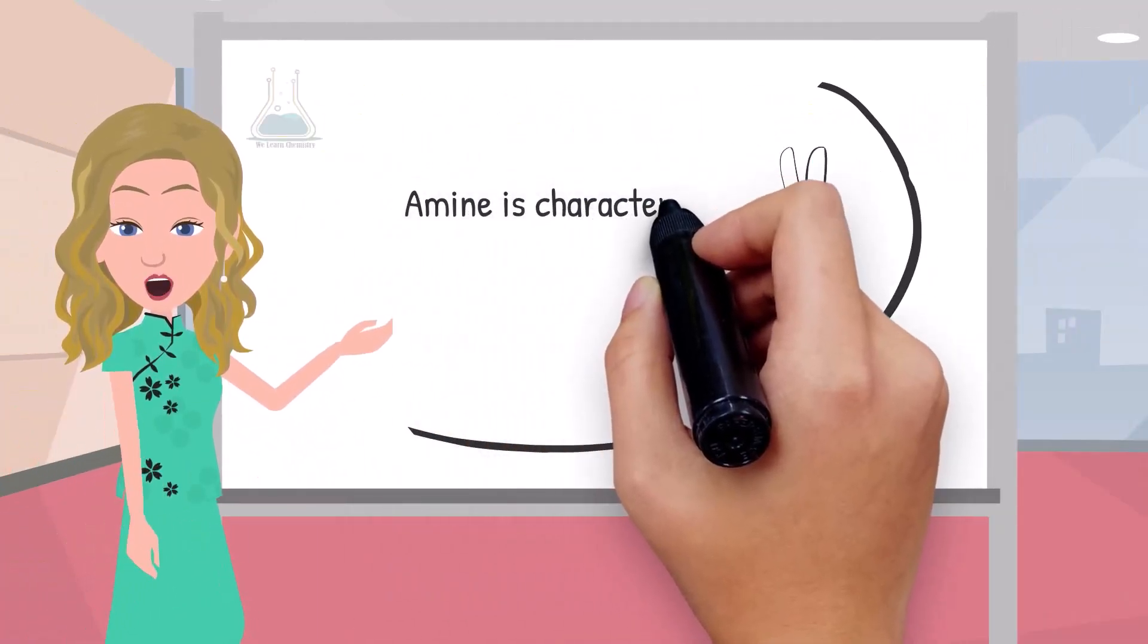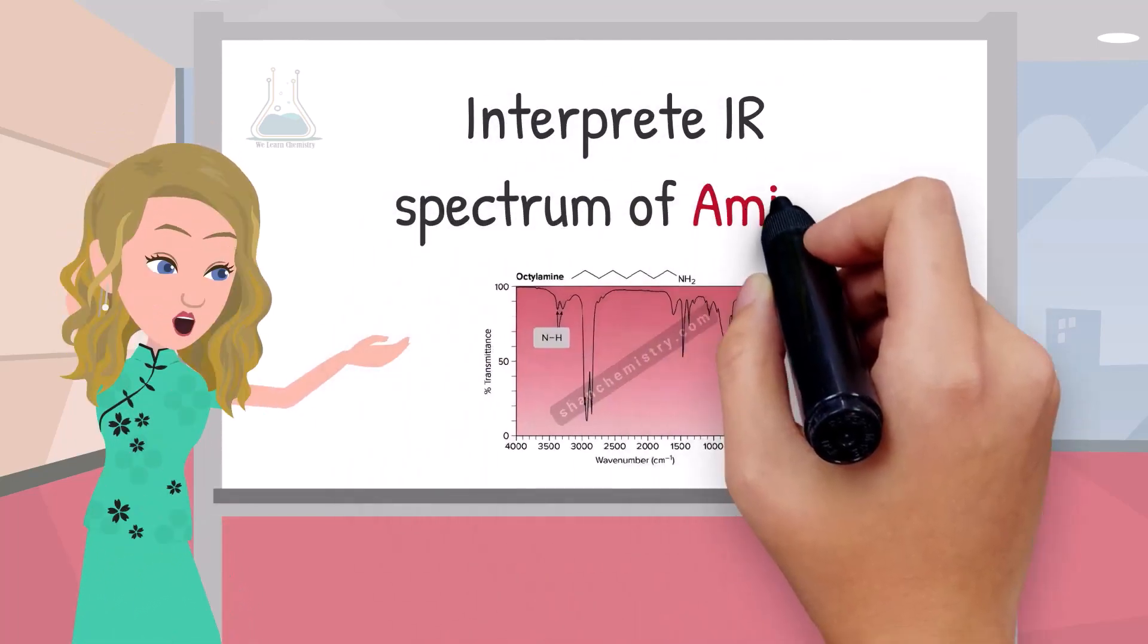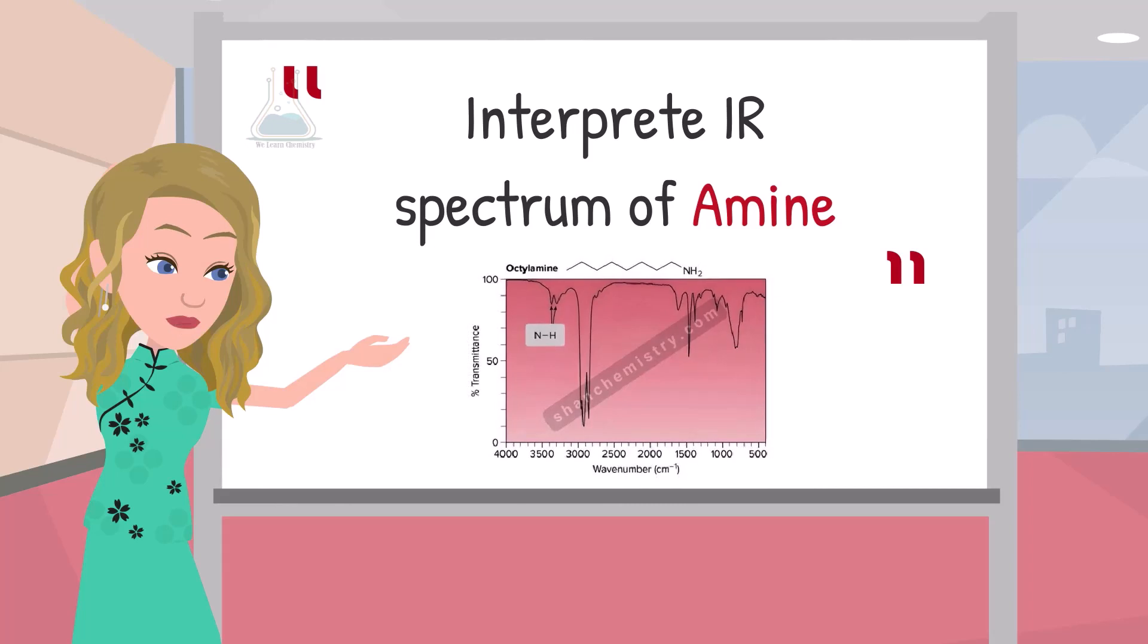The IR spectrum of amine is characterized by a couple of weak absorptions. Let us interpret the IR spectrum of octylamine, which is an amine.